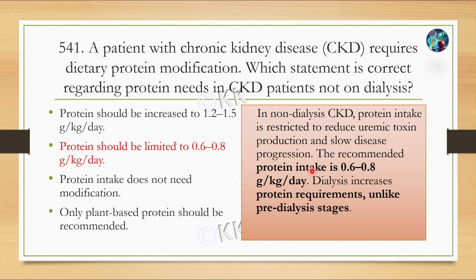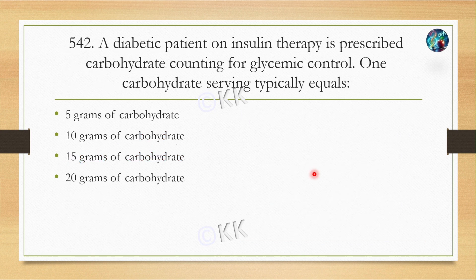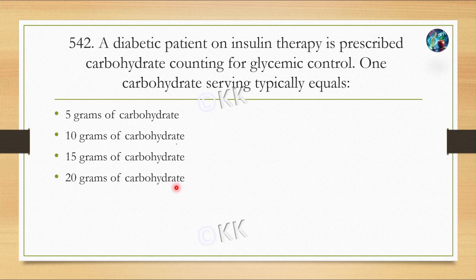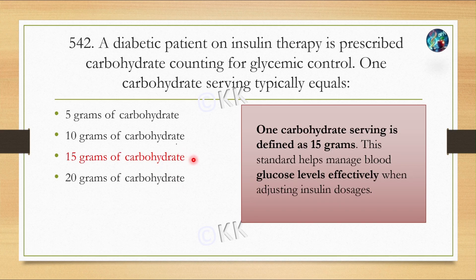Next question: a diabetic patient on insulin therapy is prescribed carbohydrate counting for glycemic control. One carbohydrate serving typically equals: Option A: 5 grams of carbohydrate. Option B: 10 grams. Option C: 15 grams. Option D: 20 grams. The correct answer is Option C — 15 grams of carbohydrate equals one carbohydrate serving.